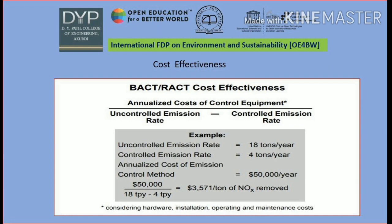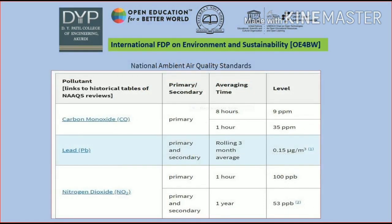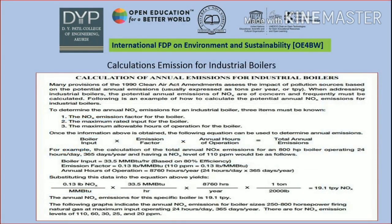Again, we discuss a historical example as per the NAAQS. We can calculate the emissions for industrial boilers. To determine the annual nitrogen oxide emissions for industrial boilers, three terms must be known: nitrogen oxide emissions, maximum rated power, and related parameters.